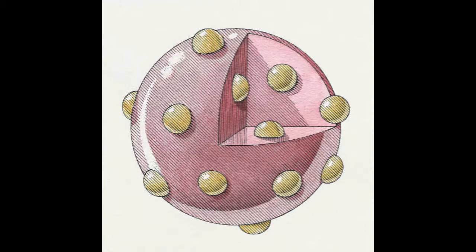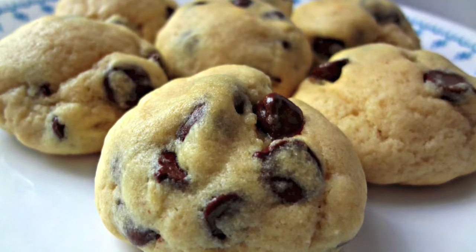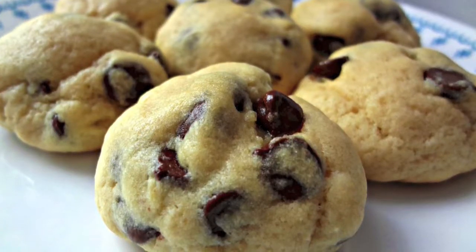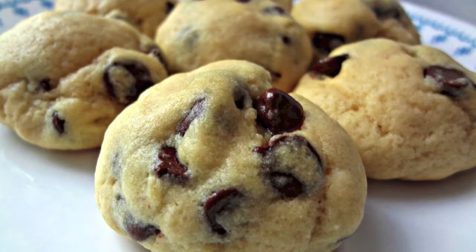Here is a picture of what a plum pudding atom might look like. The pink area represents the positively charged material, and the yellowish particles are the negatively charged electrons mixed in. Since not everyone has had plum pudding, you can also think of it like chocolate chip cookie dough — the dough is the positively charged material and the chocolate chips are the negatively charged electrons. Thomson called his model the plum pudding model.